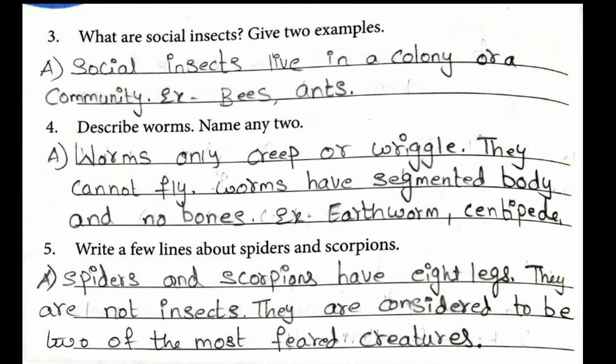Third question: What are social insects? Give two examples. Social insects live in a colony or a community. Examples: bees and ants. Fourth question: Describe worms and name any two. Worms only creep or wriggle, they cannot fly. Worms have a segmented body and no bones. Examples: earthworm and centipede. Fifth question: Write a few lines about spiders and scorpions. Spiders and scorpions have eight legs — they are not insects. They are considered to be among the most feared creatures.